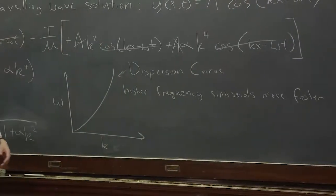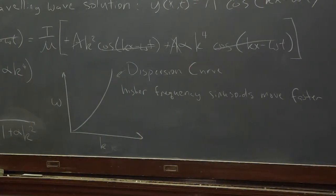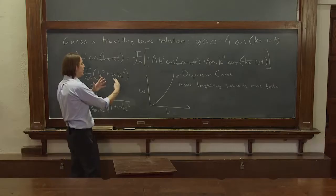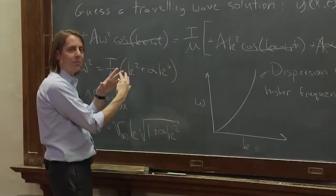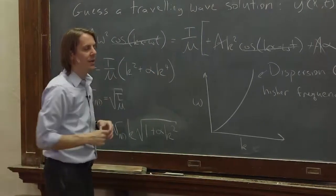And what we see here is that higher frequency sinusoids move faster, because it's getting a higher slope as we go. And this is why the delicate balance of Fourier components that we make to make a shape fall apart, because they don't all move at the same speed.